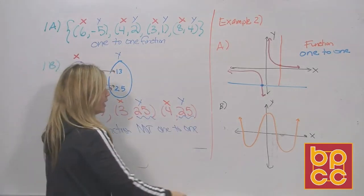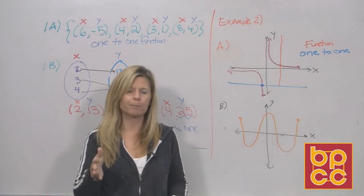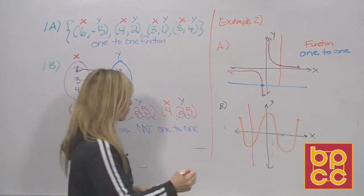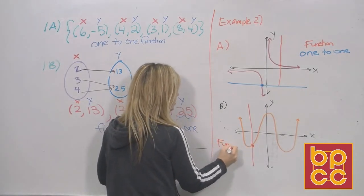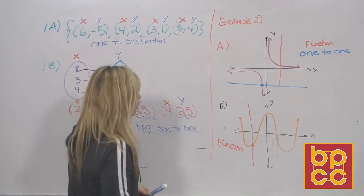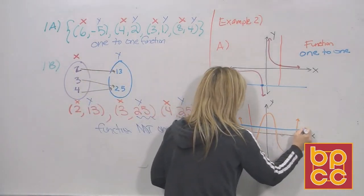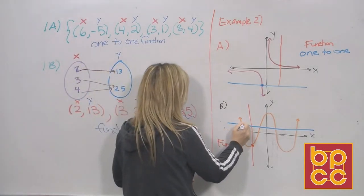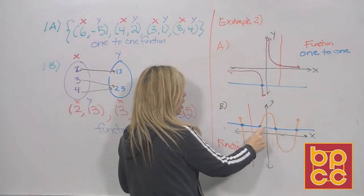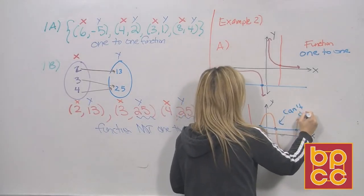Now look at the bottom graph in orange — some curved line. First, is it a function? Drawing a vertical line, it touches the orange curve once — so this is a function. Now is it one-to-one? Drawing a horizontal line through the orange curve, it touches once, twice, three times, four times. Whatever y value that is, it repeats four times. Therefore this is not one-to-one.